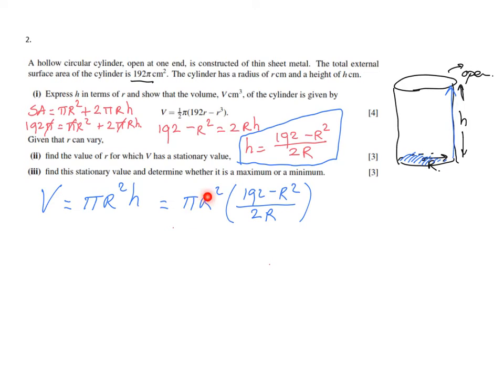If I expand this and do some rearranging, I should get something similar to what they want. Let me expand it: it's going to be (192πr² - πr⁴)/(2r). If you compare what we have here and what they have there, you see they have the half and π out of the brackets.